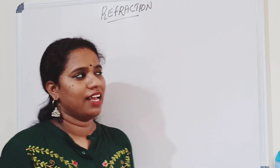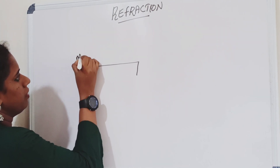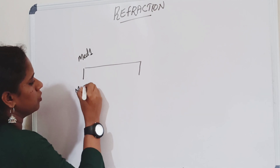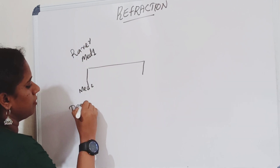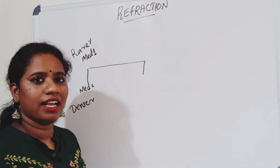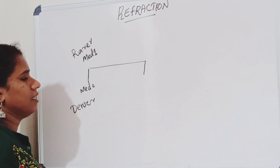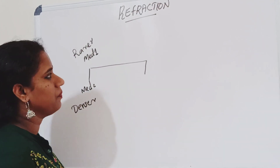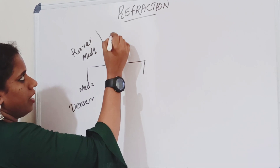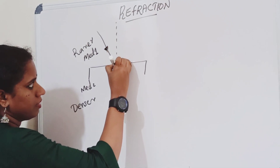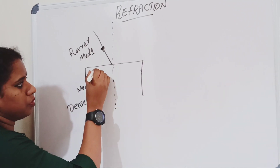Please keep watching our board and understand the concept. We are considering two media: this one is medium one and this one is medium two. This one is the rarer medium and this one is the denser medium. Here is an imaginary line — we call it the normal.